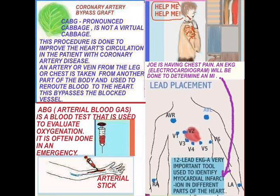Very often when patients are in respiratory distress, they have a test done — a blood test called an ABG, which means arterial blood gas. That is done and it will determine oxygenation as well as other things in the blood.